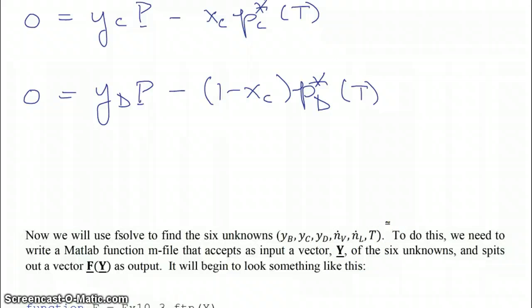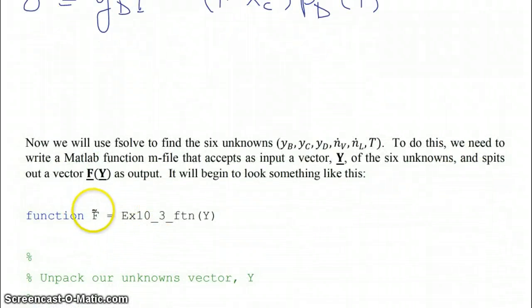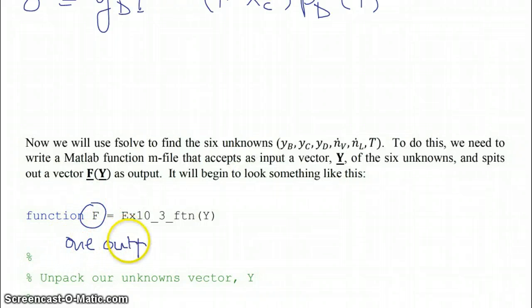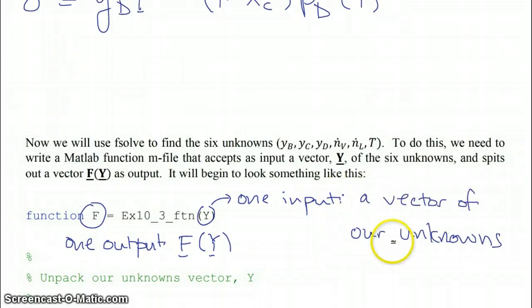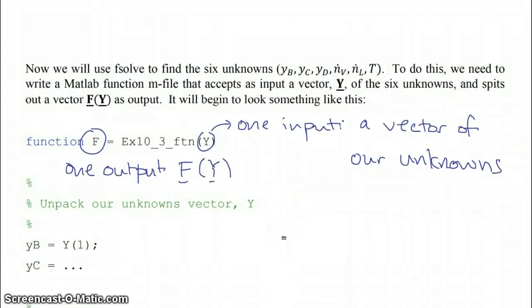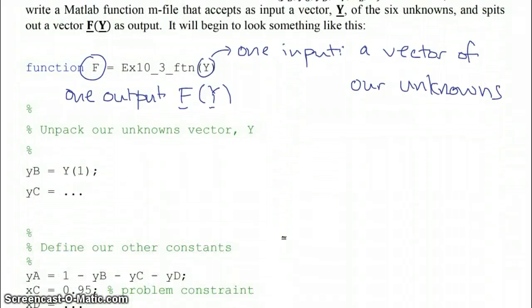The first thing we need to do is write a MATLAB function m-file that accepts as input some vector y, which is our vector of our six unknowns, and returns the vector f(y). This function will have one output, f(y), and one input, a vector of our unknowns. The next thing we're going to have in our function is that we want to unpack our unknowns vector y.